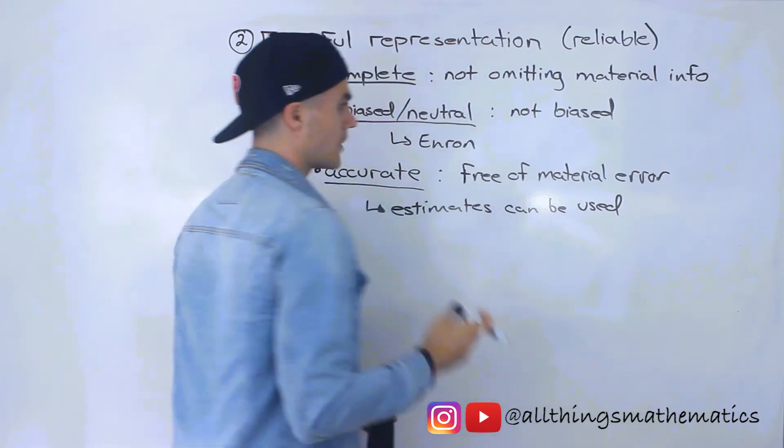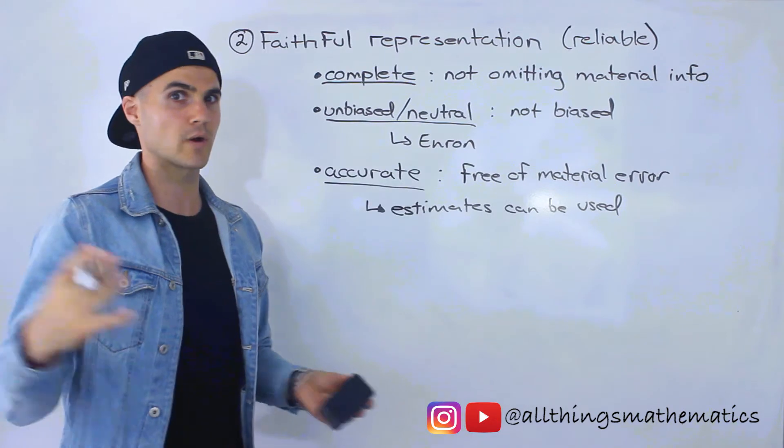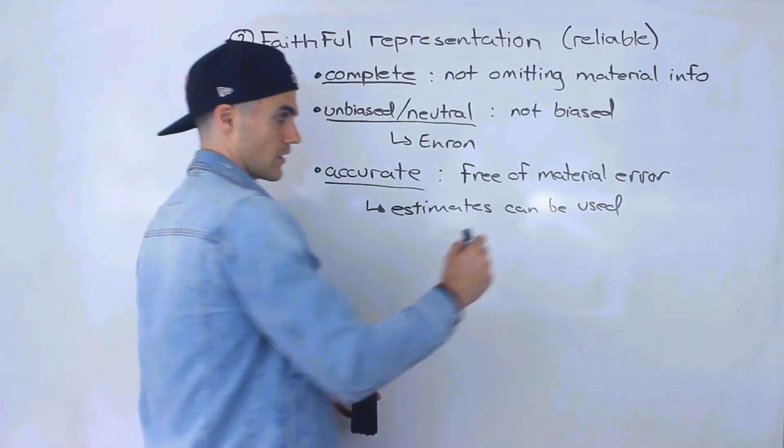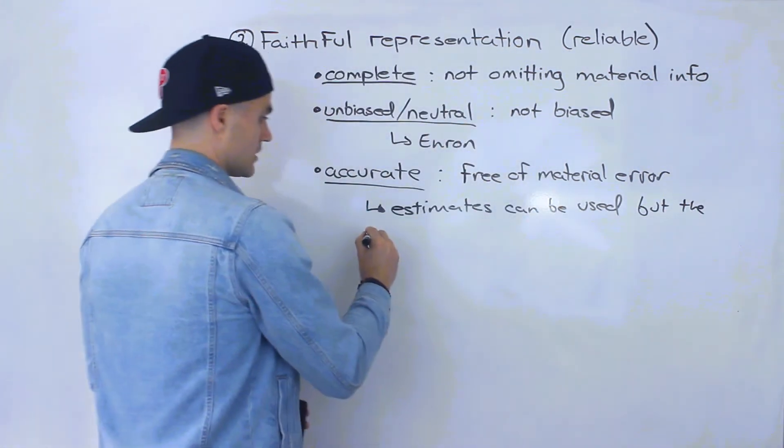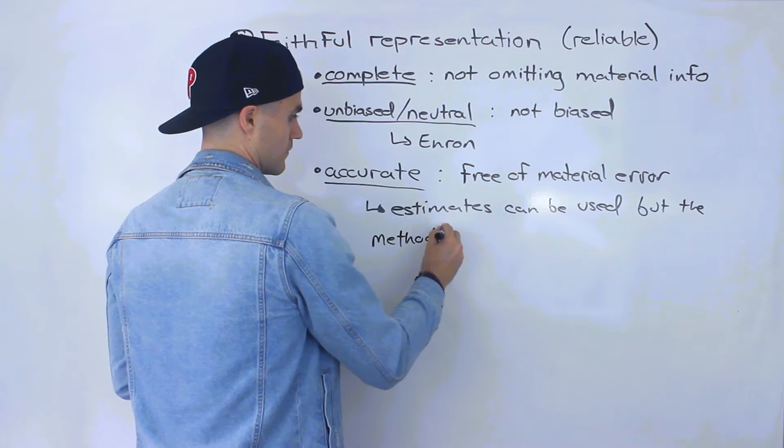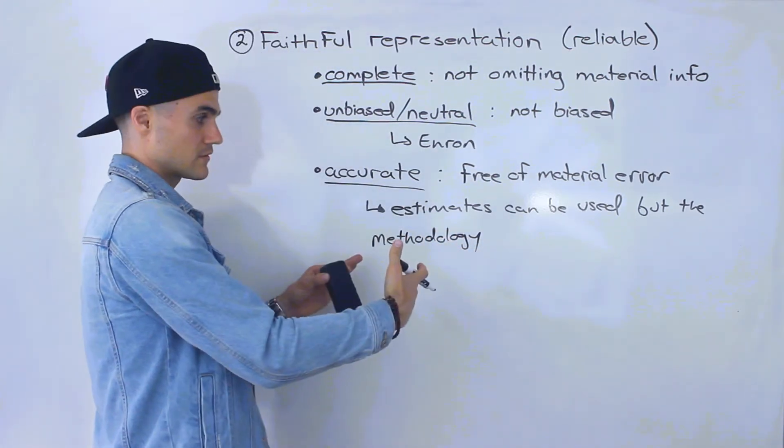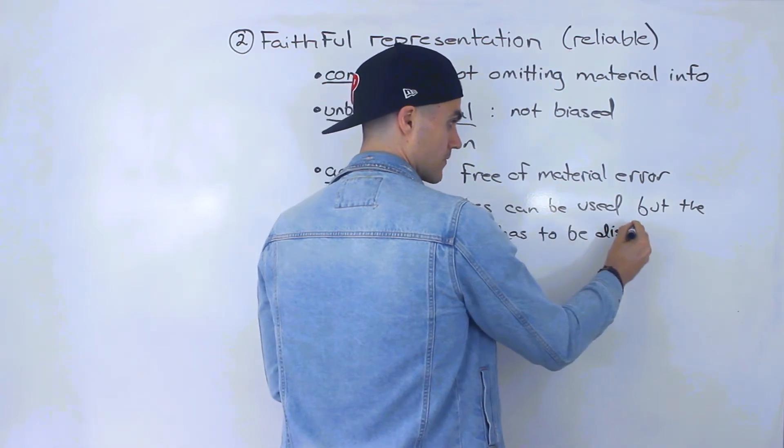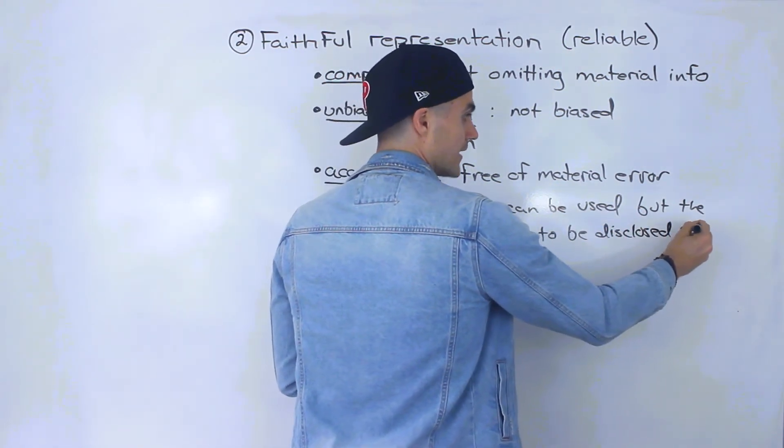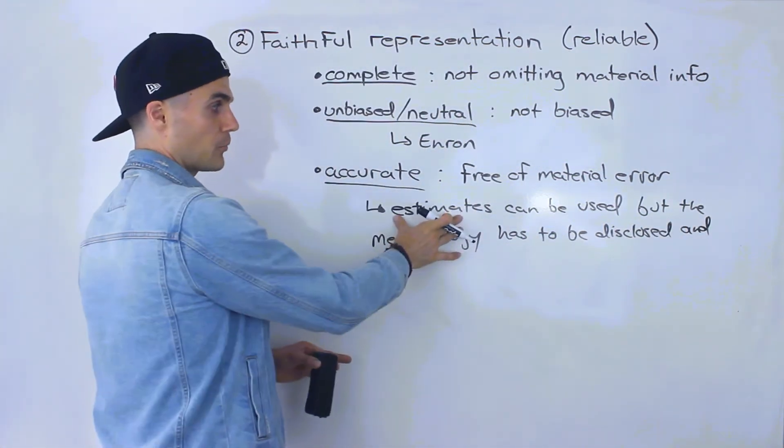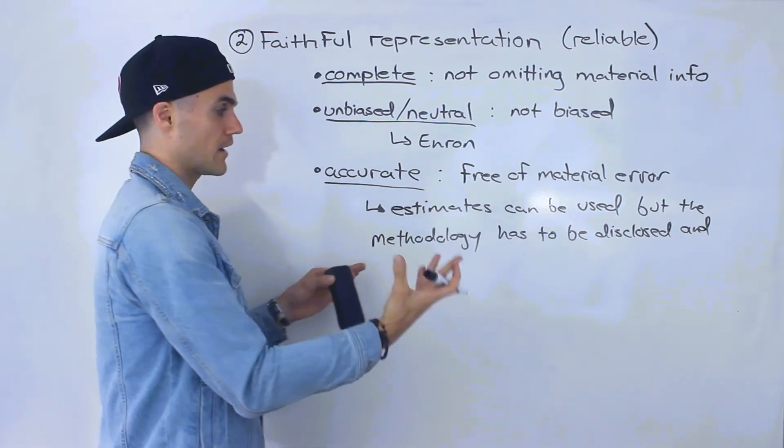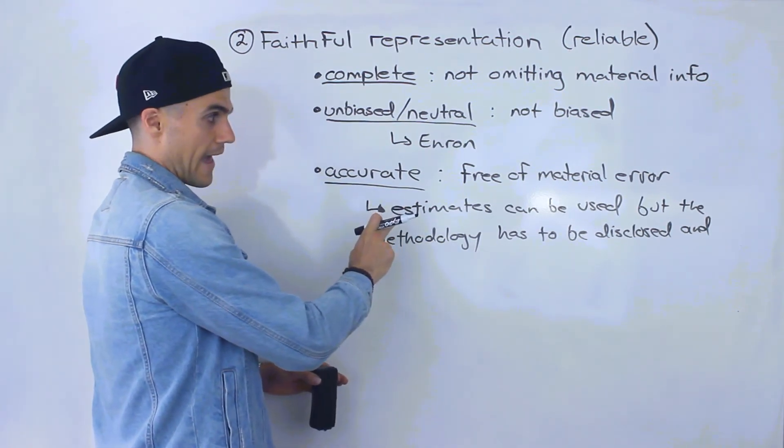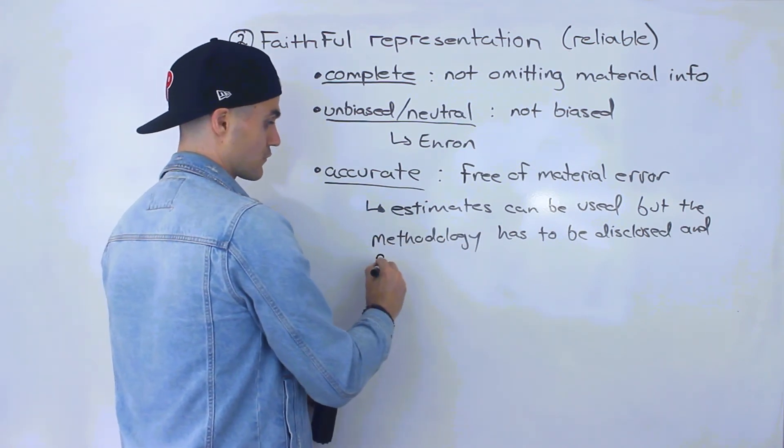So for example, if a company has been in business for a long while, they've had assets maybe for 20 years, maybe real estate for 20 years. Estimates can be used to value things. But the methodology of how we arrived, of how they arrived at the estimates has to be disclosed. And whatever methodology you do use to come up with these estimates, whether it's using comparables or whatever, the methodology has to be disclosed, the method that you're using for the estimates. And when you're running this methodology, that has to be free of material error.